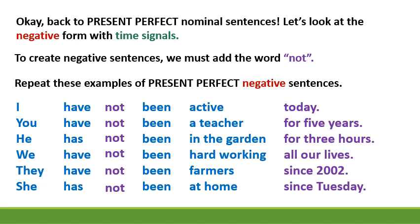Repeat these examples of present perfect negative sentences: I have not been active today. You have not been a teacher for five years. He has not been in the garden for three hours. We have not been hardworking all our lives. They have not been farmers since 2002. She has not been at home since Tuesday.